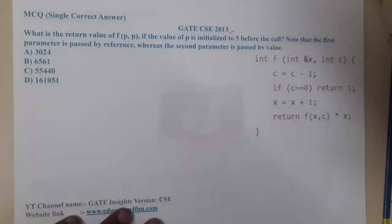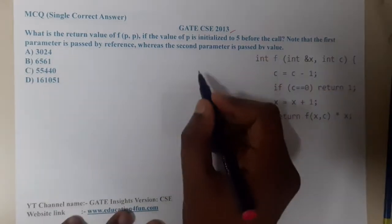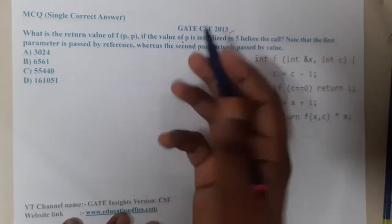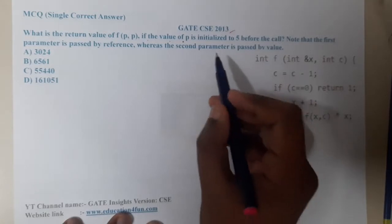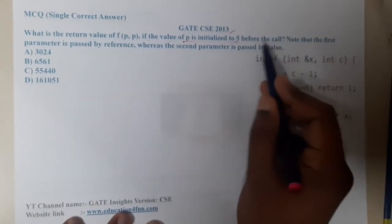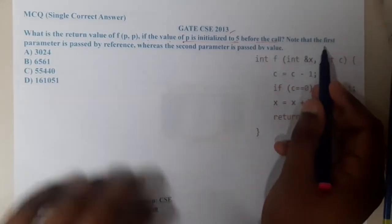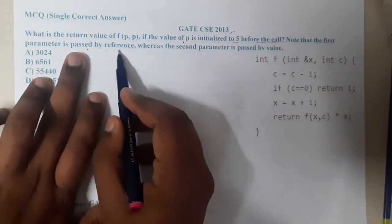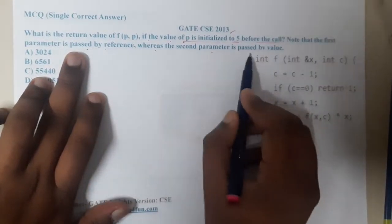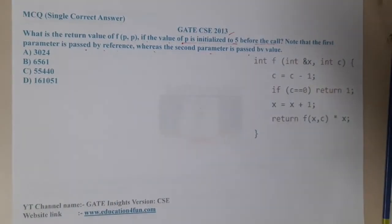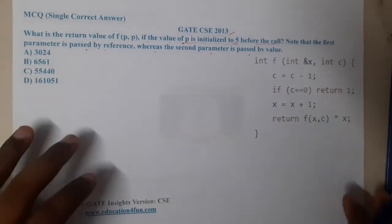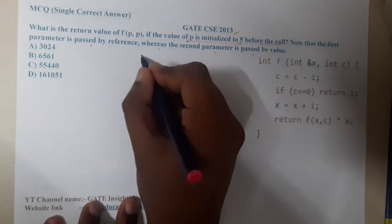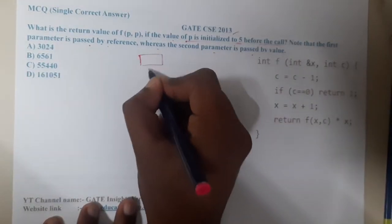The question is: what is the return value of f(p, p) if the value of p is initialized to 5 before calling the function? Note that the first parameter is passed by reference, whereas the second parameter is passed by value. This is an interesting question, so let us concentrate for a few minutes.